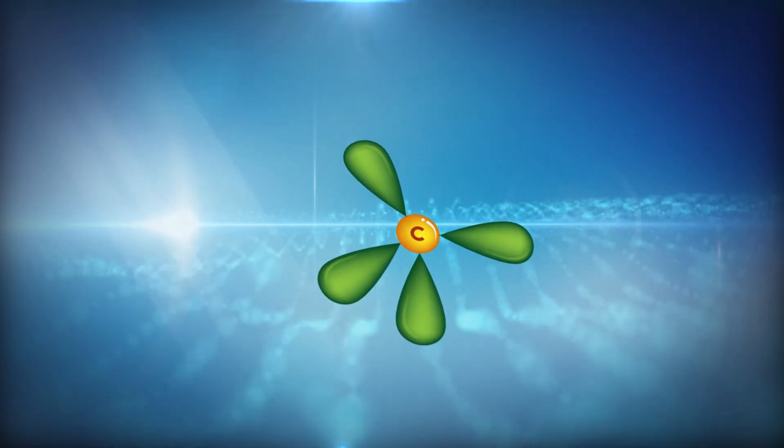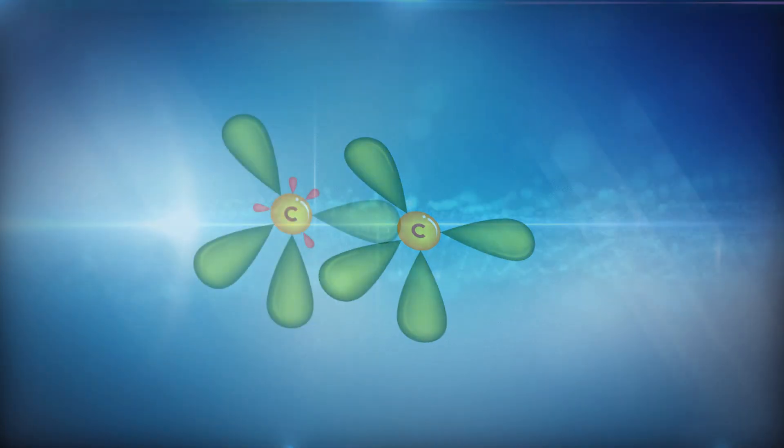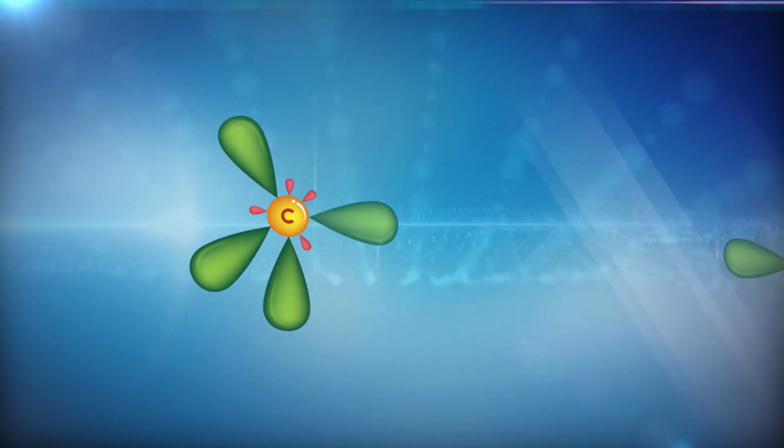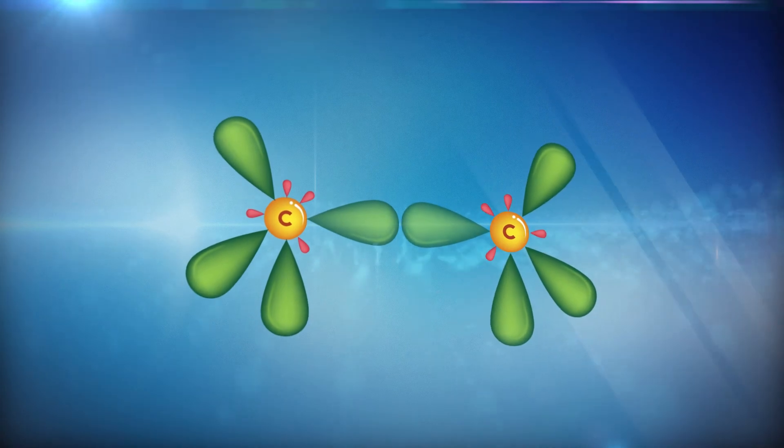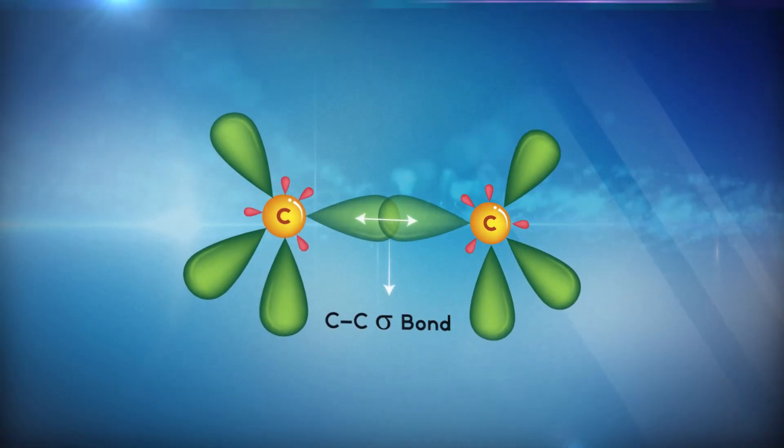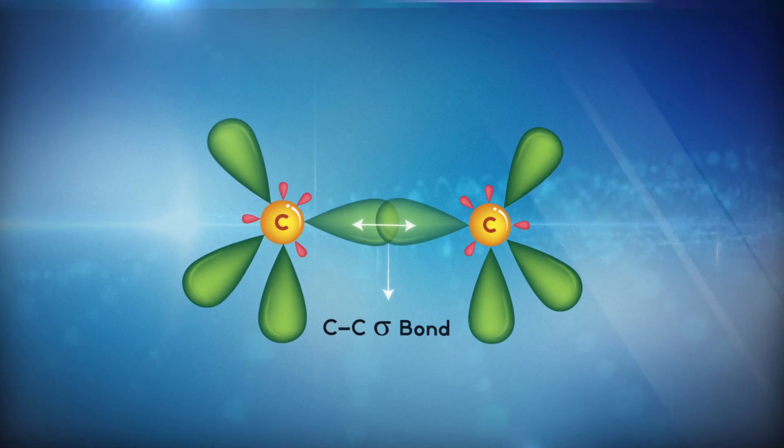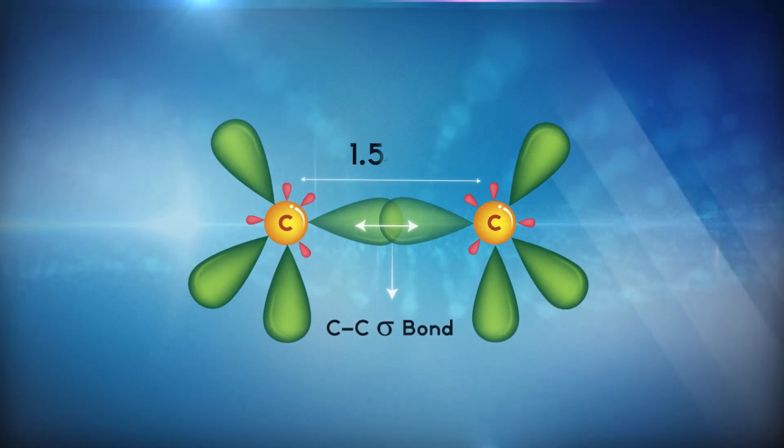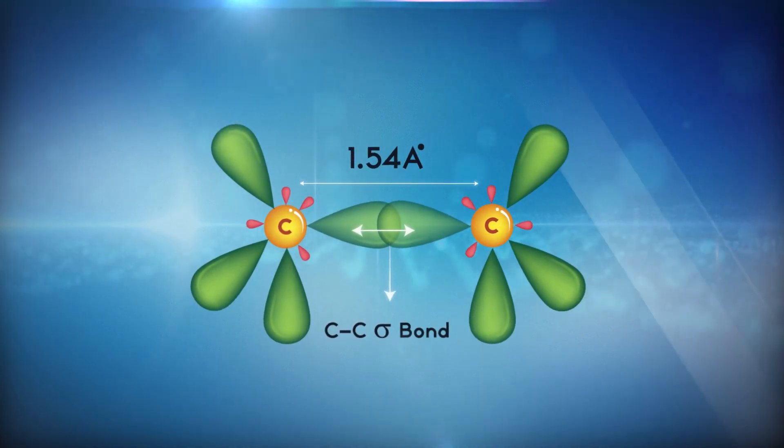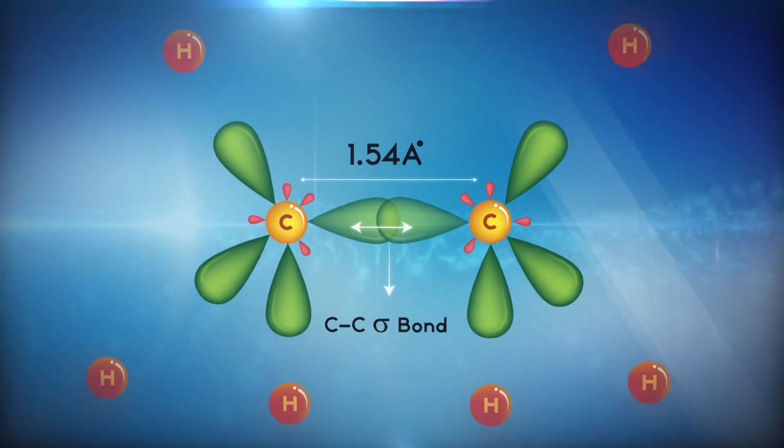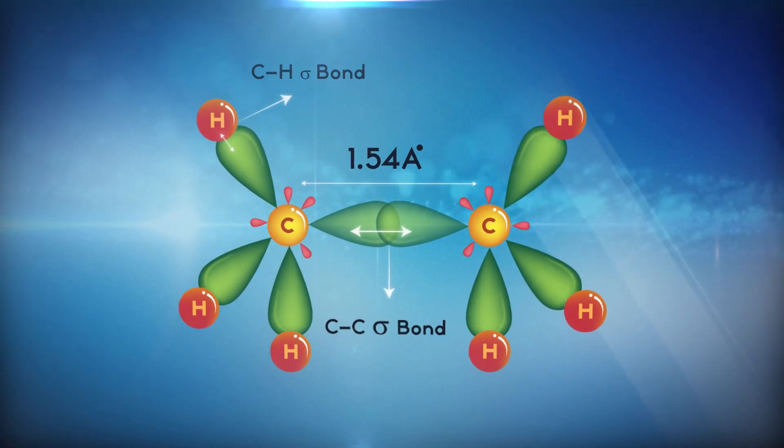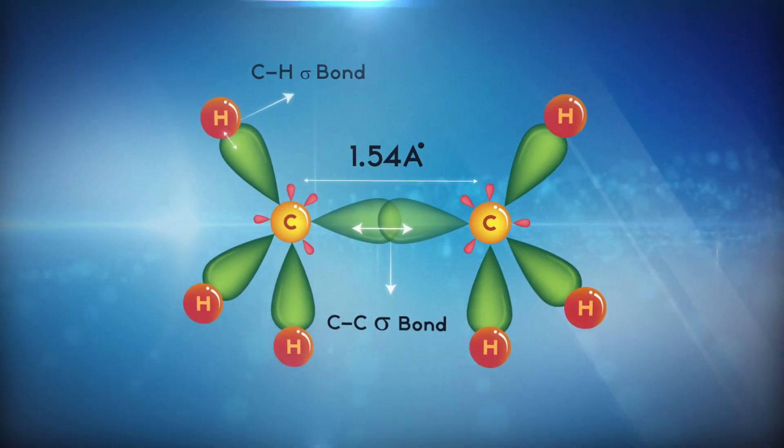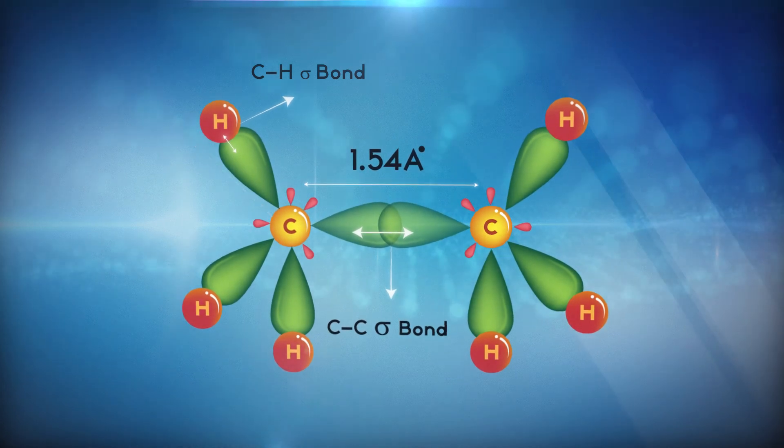When two such hybridized carbon atoms are combined together, they form a carbon-carbon sigma bond with bond length of 1.54 angstrom. The remaining six sp3 hybrid orbitals combine with hydrogen to form carbon-hydrogen sigma bonds with bond length of 1.09 angstrom.